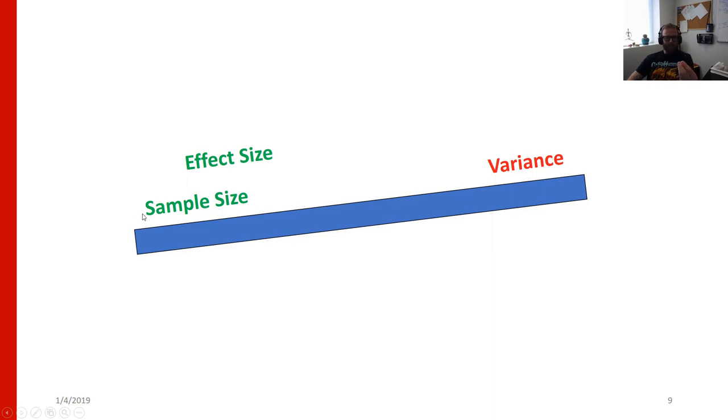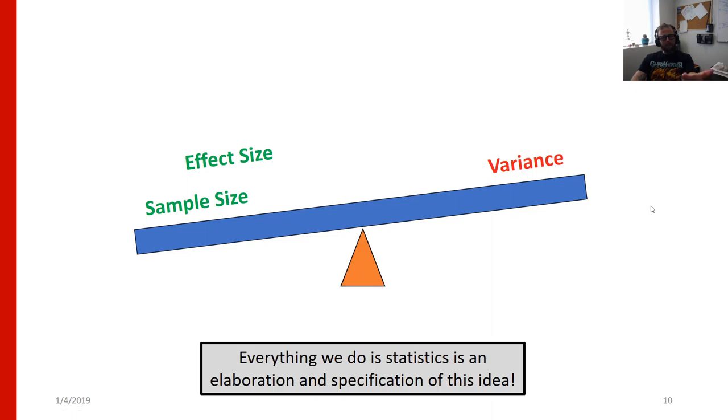So effect size and sample size are things that are sort of going to work together towards our statistical certainty. Bigger effects, bigger relationships are easier to find. And if you use bigger and bigger samples, that's going to help improve the certainty you have that the pattern you're observing is correct. And on the opposite side of this little seesaw, is the variance. Variance works against these other two factors. And it's going to create uncertainty in our relationships. So if we have a very small effect with a lot of variability, we need a really big sample to measure it.